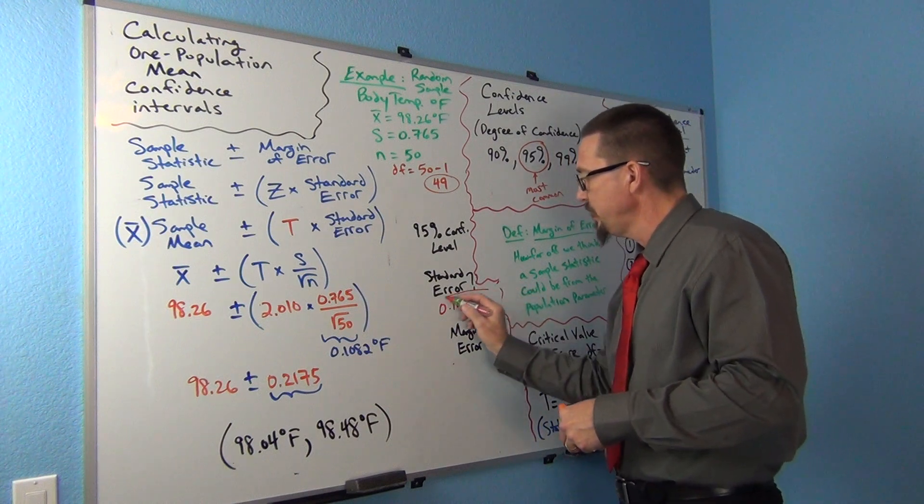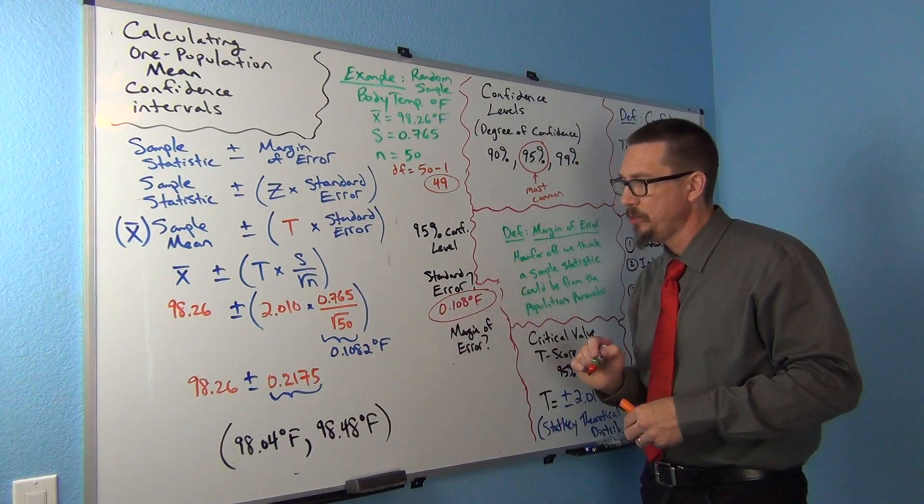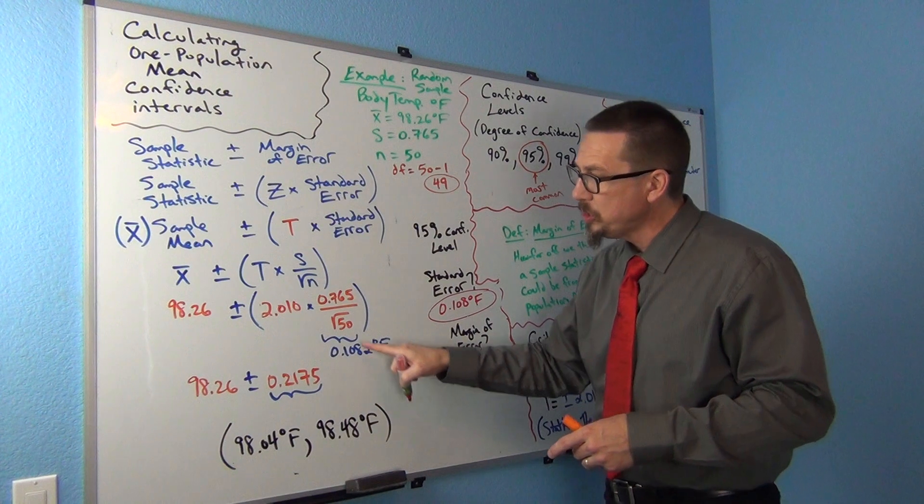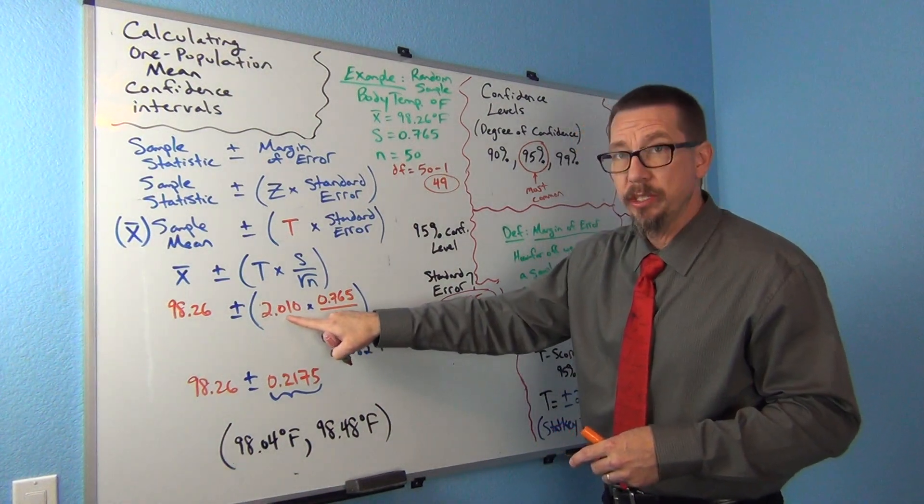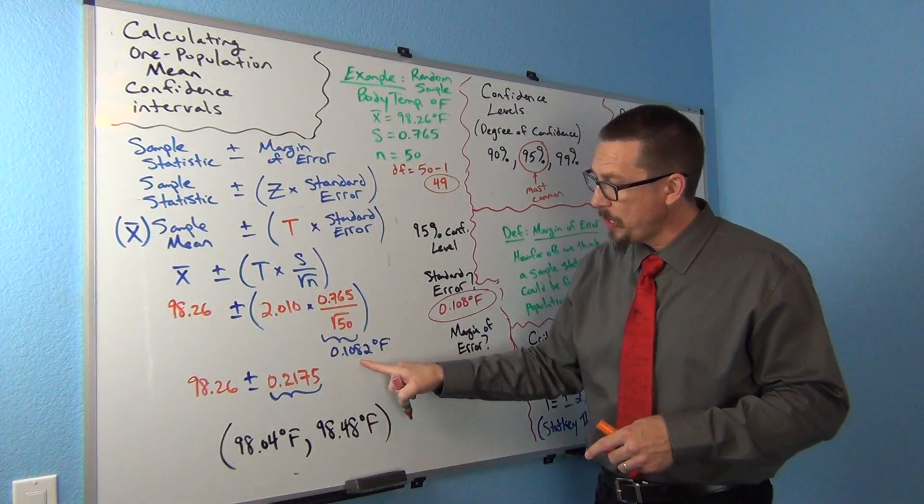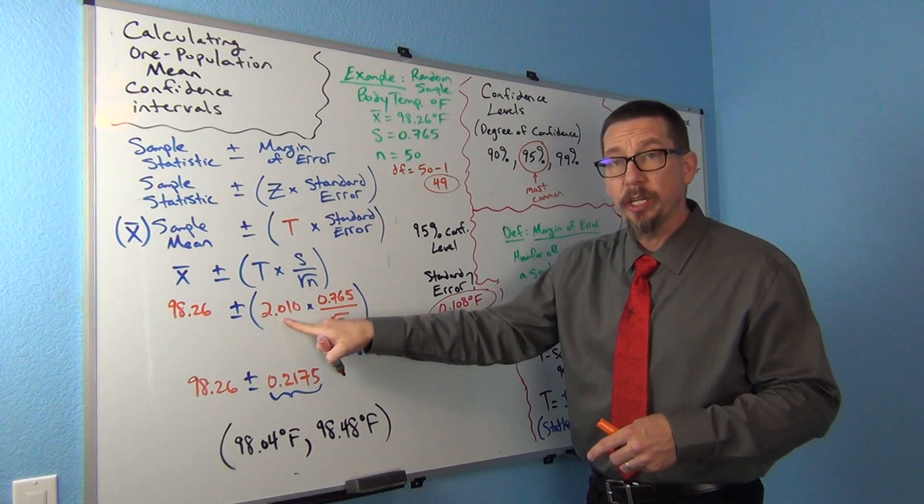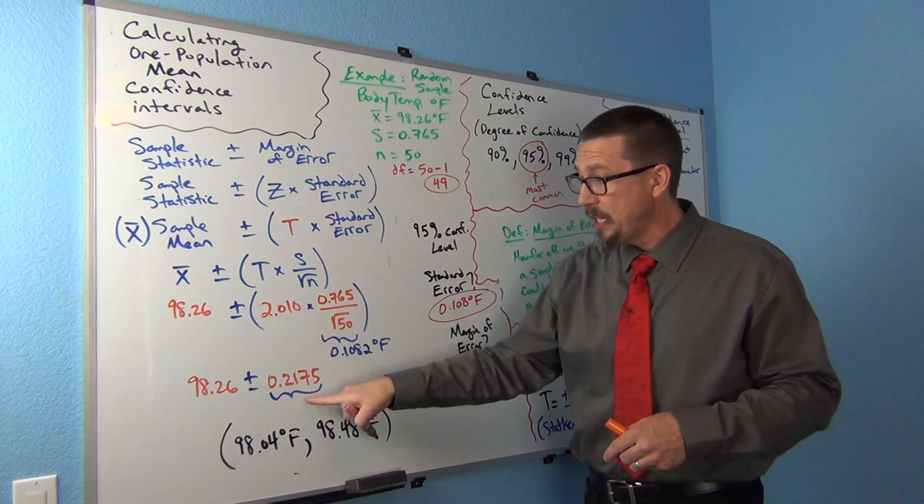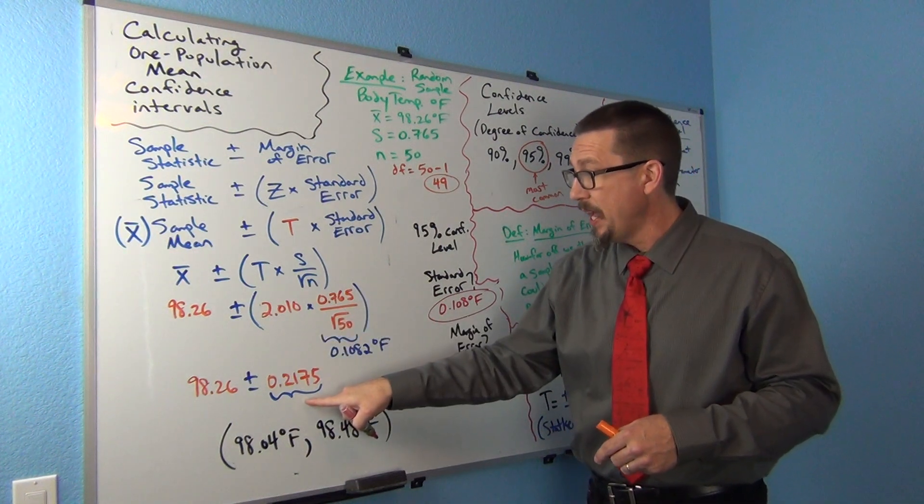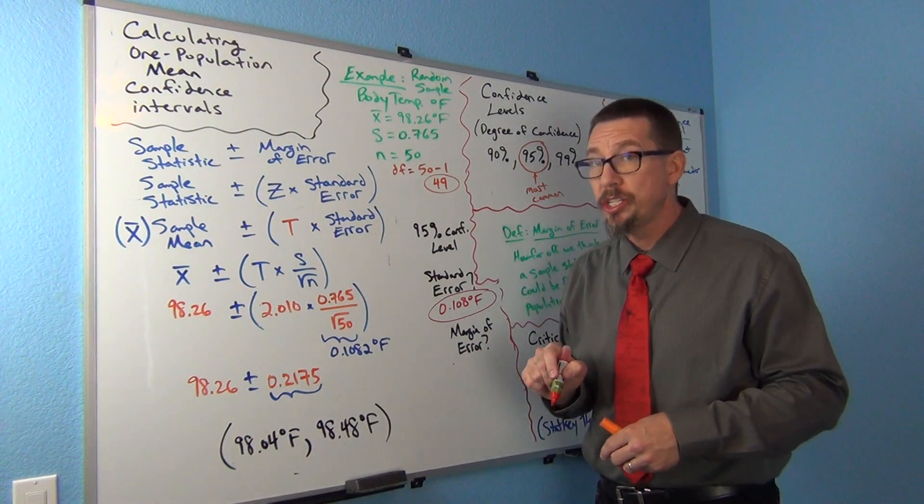Now I've got to multiply that by the critical value, the t-score. When I multiply 0.1082 times the critical value t-score, I get 0.2175. That's going to be my margin of error.